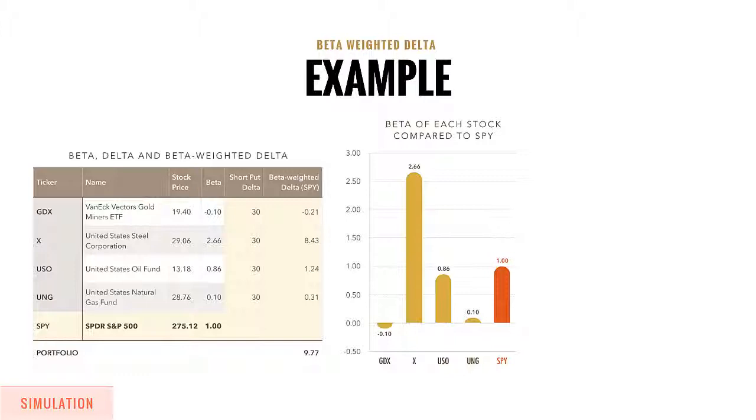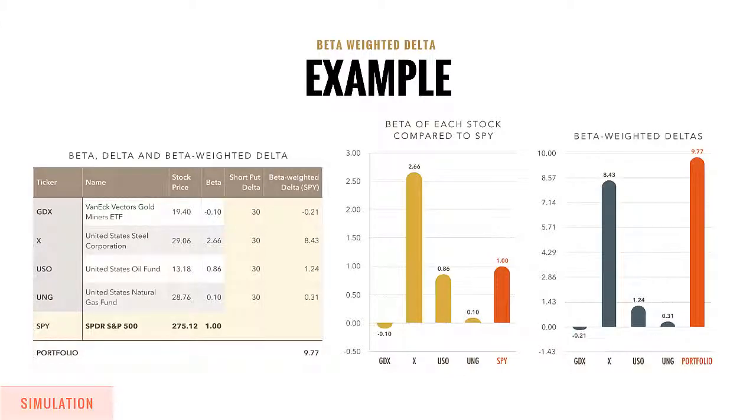Once you beta weight your portfolio, it will then tell you what the delta expectation is of each of those products against the SPY instead of against themselves. If you were looking in your portfolio on the left, you would notice that the delta would say 30 and 30 and 30 and 30 for each individual trade. But they're not all the same risk. As a matter of fact, they all pose different risks.